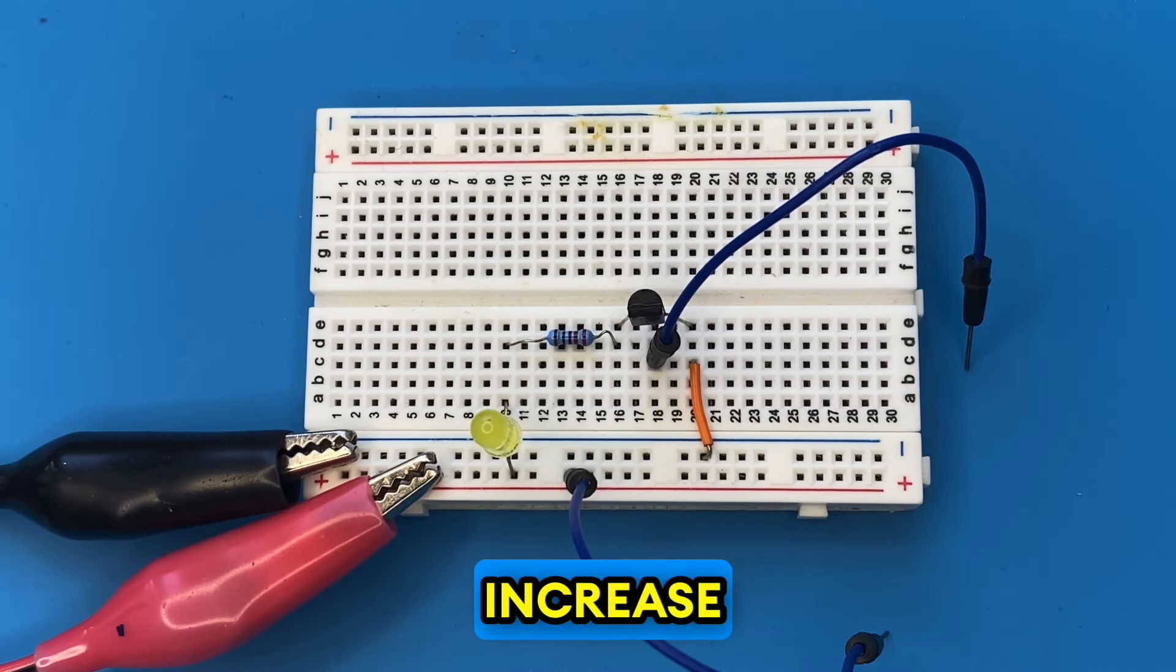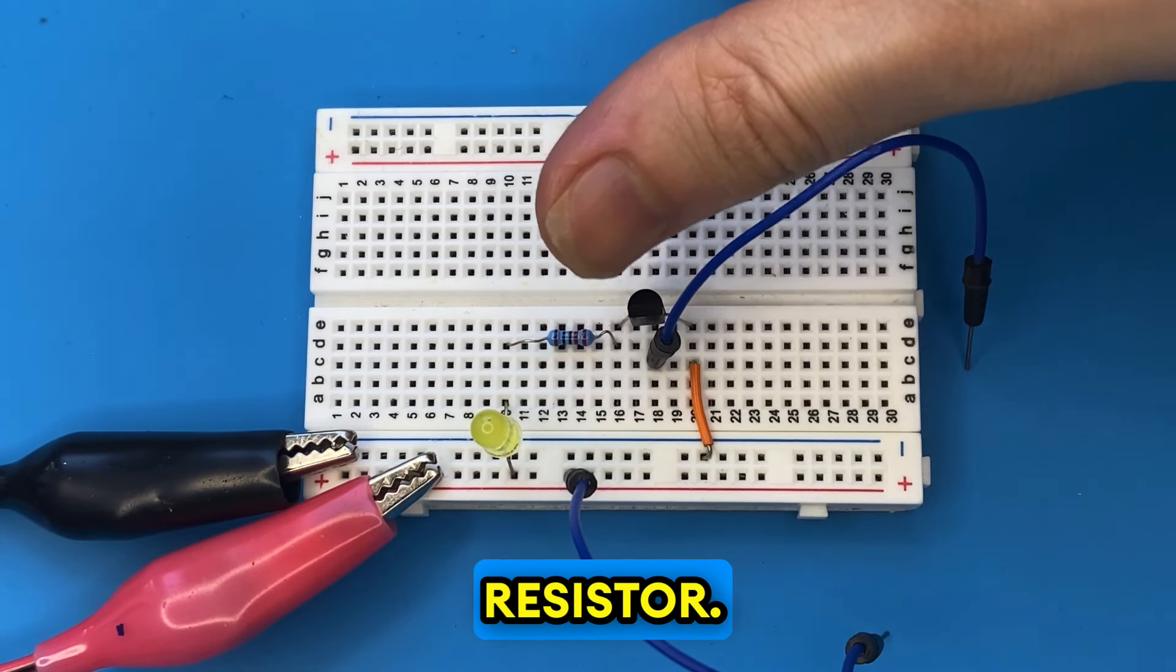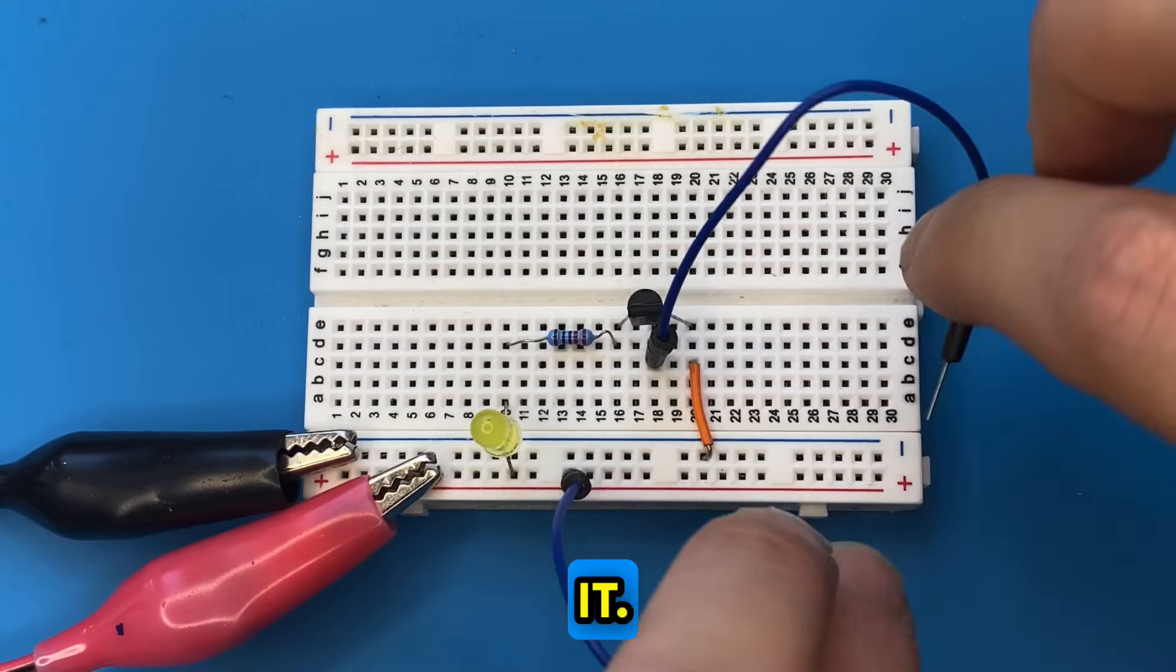If you want to increase your input voltage or if you are using a nine volt battery, please increase your resistor. For example, you can use a one kilo ohm resistor. Safety has to be first. Now let's go ahead and test it.